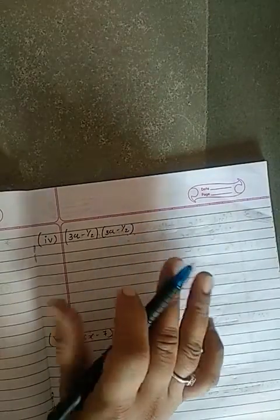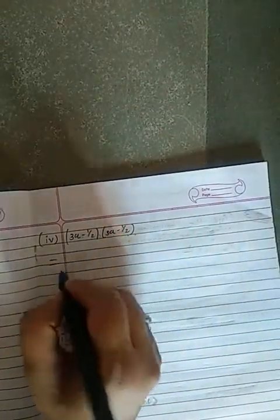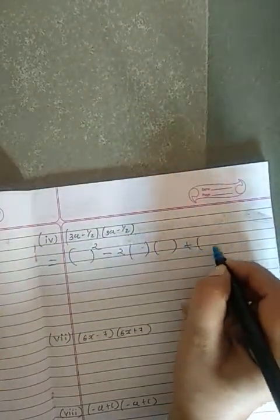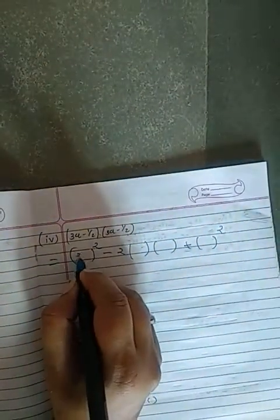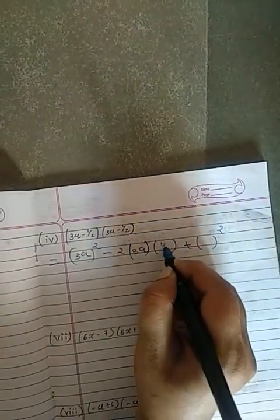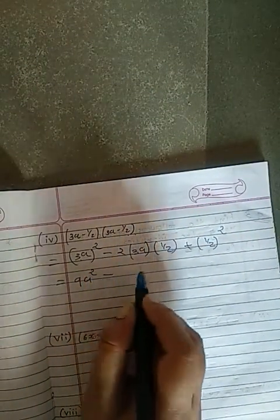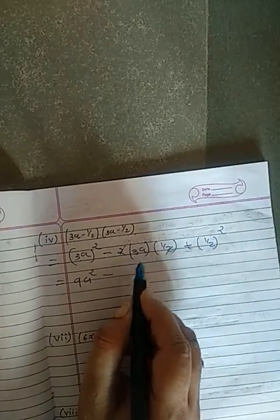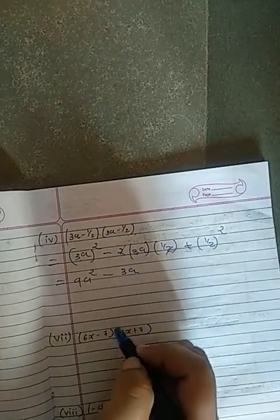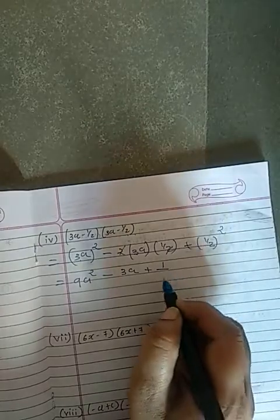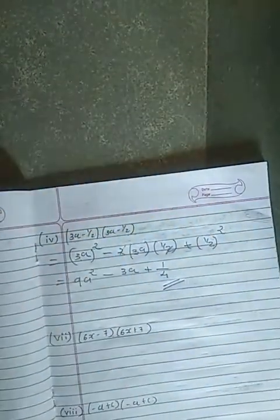Next: (3a - ½)(3a - ½). Process is the same, A minus B identity. Square of first term minus 2 into first × second, plus square of second. First term is 3a, second term is 1/2. So: 9a² minus (the 2 and 2 cancel) leaving 3a, and square of 1/2 = 1/4. Answer: 9a² - 3a + 1/4. Done.